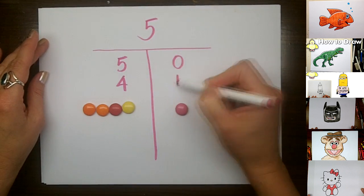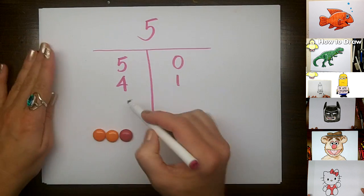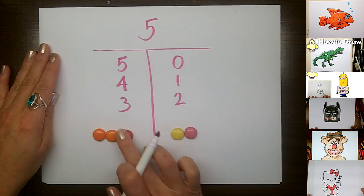And then when you move one over, you see that four and one also makes five.